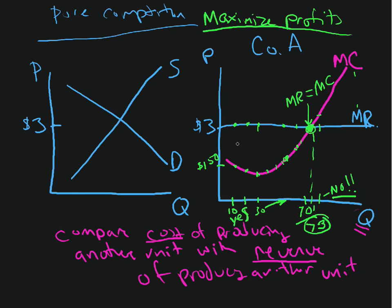Because that's where marginal revenue equals marginal cost. If they make less than 73 units, they're losing out on all this production where revenue is greater than cost. If they make more than 73 units, they're making product where the cost is greater than revenue, and they're losing money. So they maximize profits by equating marginal revenue with marginal cost.